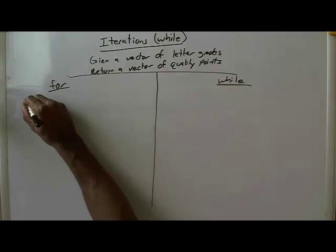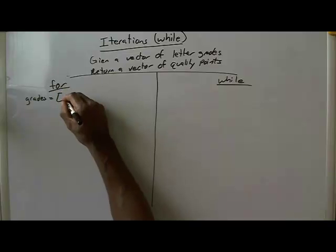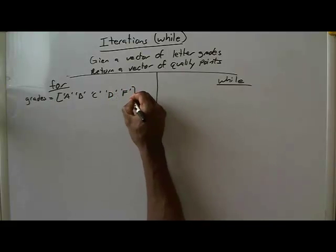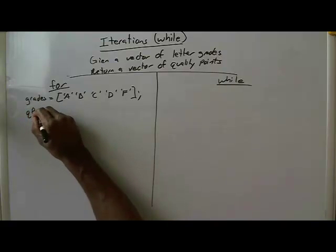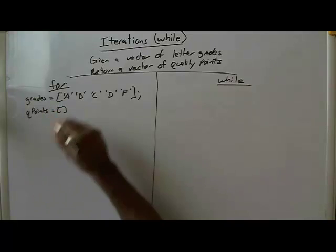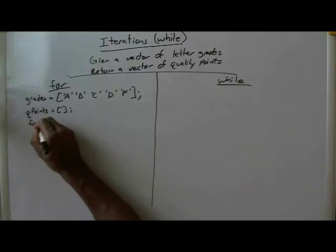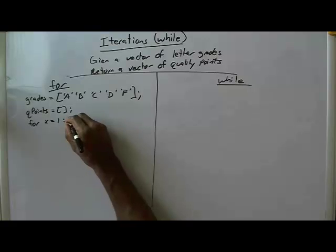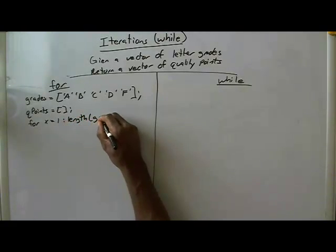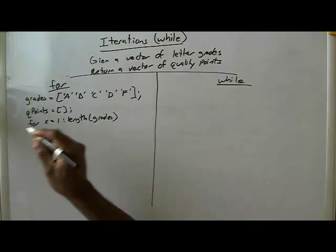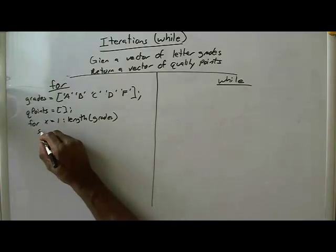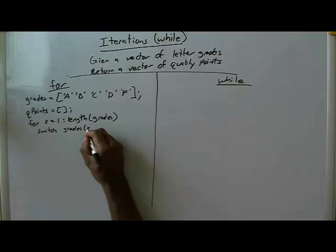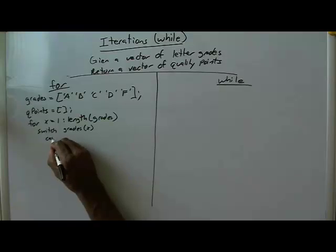So let's start. As you recall, I have a vector called grades — A, B, C, D, and F. My results vector is going to be QPoints, which starts off as empty. I do my for loop for x equals 1 to the length of grades. And then in this case we did a switch, and we're going to switch on grades indexed at x using our indexing method.